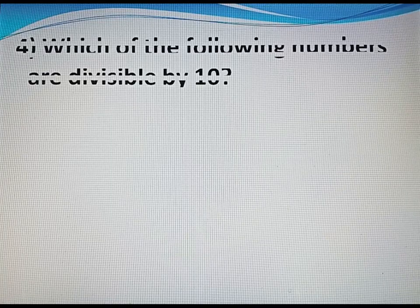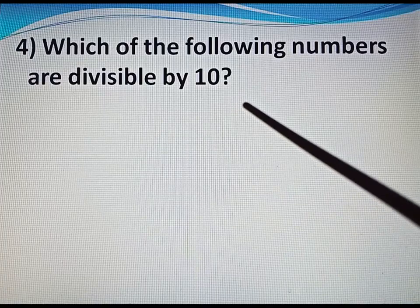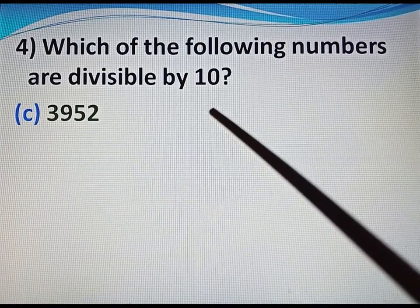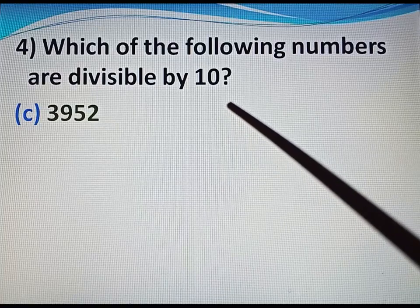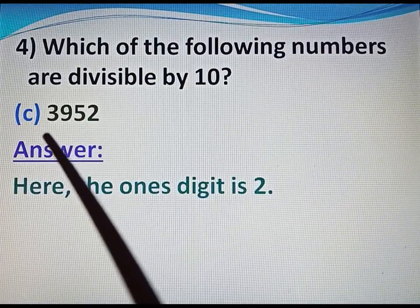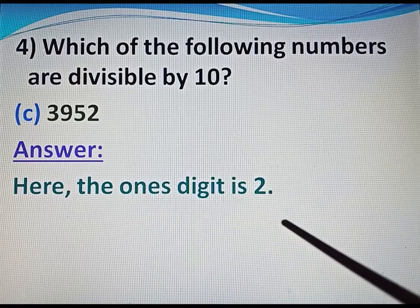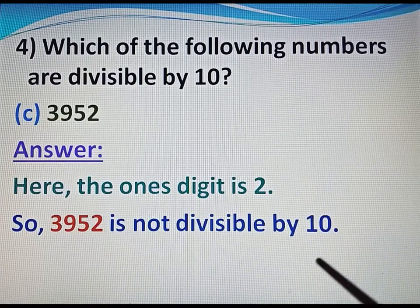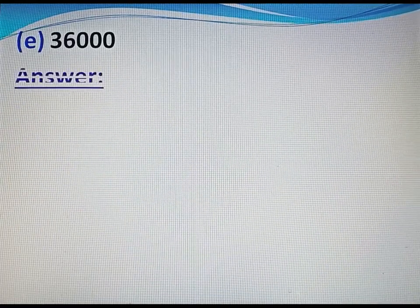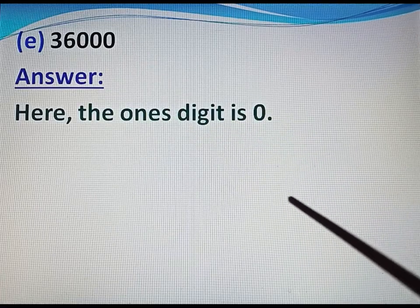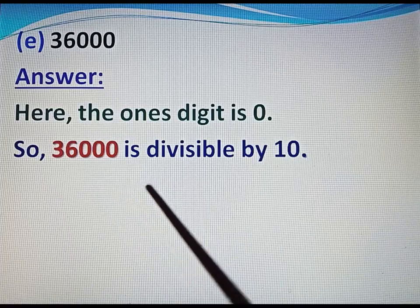Now come to question number 4: which of the following numbers are divisible by 10? For divisibility by 10, the digit at the 1's place must be 0. Part: 3952 — the 1's digit is 2, so 3952 is not divisible by 10. Part E: 36,000 — the 1's digit is 0, so 36,000 is divisible by 10.